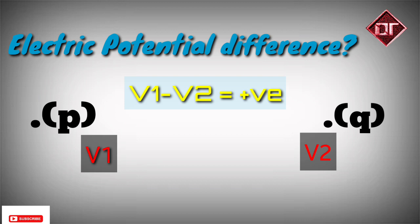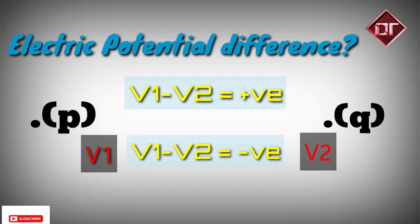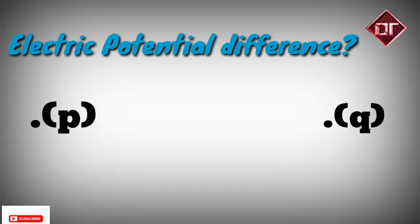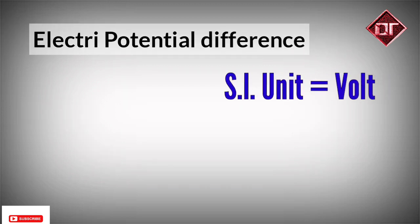And if we do V1 minus V2 and get a negative result, it means that V2 is greater than V1 — meaning Q is at higher potential compared to P. The unit of electric potential difference is the volt.